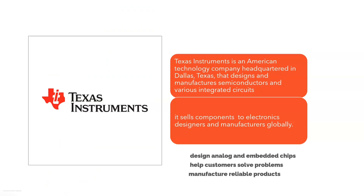Before moving on to the selection process, let me tell you about Texas Instruments in a few words. TI is an American-based company that mainly focuses on the manufacturing of semiconductors and integrated circuits. Their main area of interest is manufacturing semiconductor chips, processors, and controllers. If you have ever walked into an electronics laboratory, you may have seen chips with the TI logo. Their main area of interest is analog and embedded chips, and they also help in creating various electronic components.